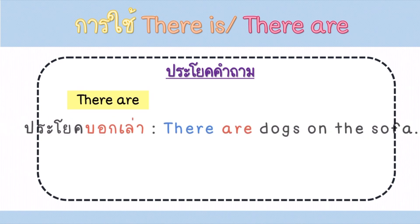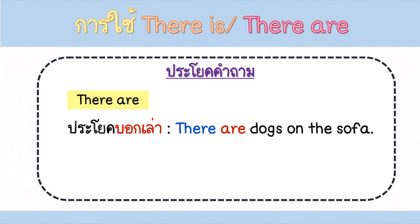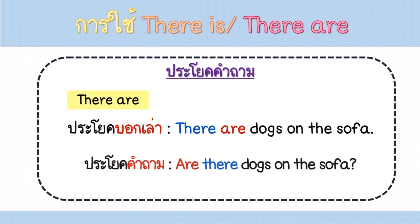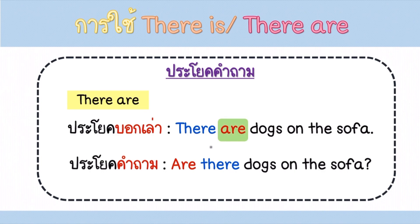ประโยคคำถามจาก There are ก็เหมือนกันเลยค่ะ ประโยคบอกเล่า There are dogs on the sofa แปลว่า มีสุนัขหลายตัวอยู่บนโซฟา เมื่อเปลี่ยนเป็นประโยคคำถาม เราก็นำ Are มาสลับไว้ข้างหน้า There ได้เลยค่ะ ง่ายๆ แค่นี้เองนะคะ ประโยคคำถามต้องมีโทนเสียงสูงตอนท้ายค่ะ Are there dogs on the sofa? แปลว่า มีสุนัขหลายตัวอยู่บนโซฟาไหม